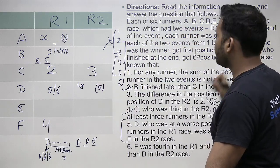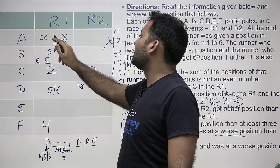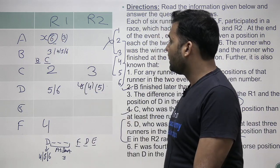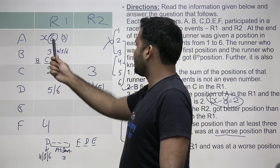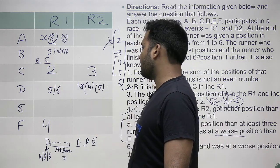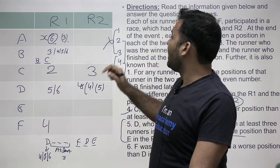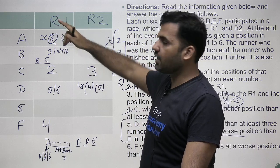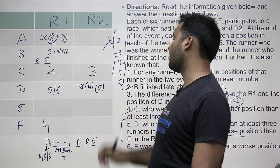After eliminating the impossible pairs, we are left with two possible cases: A=6 in R1 with D=4 in R2, or A=3 in R1 with D=5 in R2. Both pairs have a difference of 2.